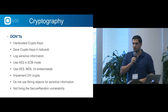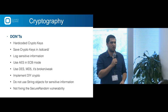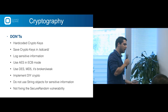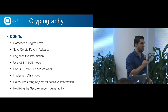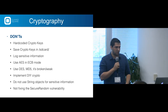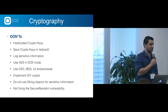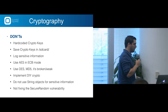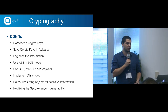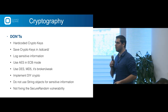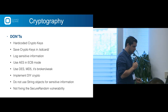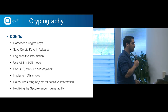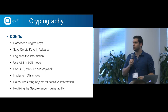If you use DES or MD5, you should know they're broken or weak — MD5 doesn't take much time to crack. Don't implement do-it-yourself cryptography; it's probably the worst thing you can do. You're not smarter than cryptographers, so use the protocols designed for encryption. And don't use string objects for sensitive information, because strings in Java are by default immutable. If you put a sensitive key in a string, you're waiting on the garbage collector and have no control over when it's removed from memory. Use a char array instead — you can zero it out and control the contents. Also, fix the SecureRandom vulnerability in pre-Jelly Bean Android.